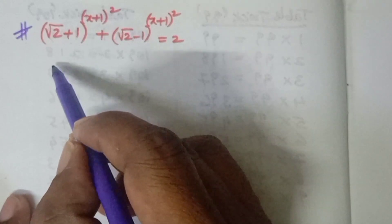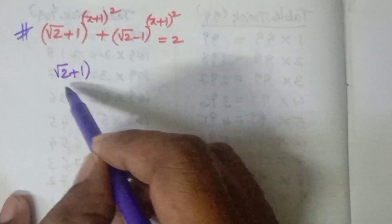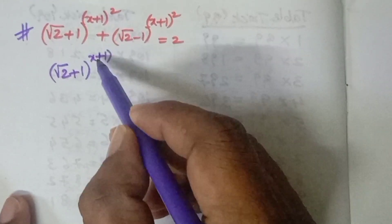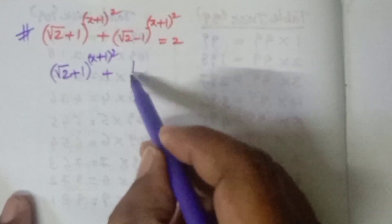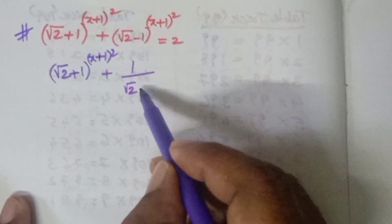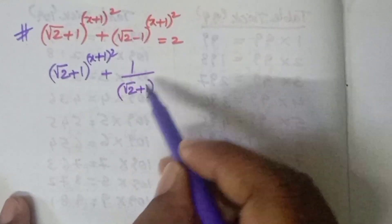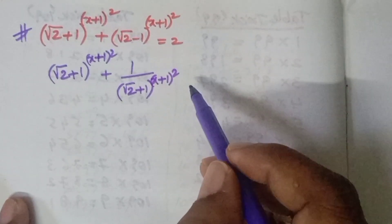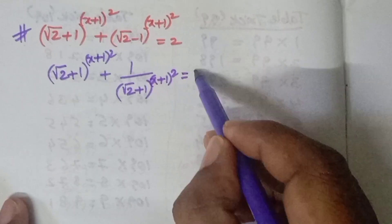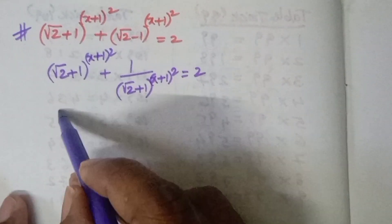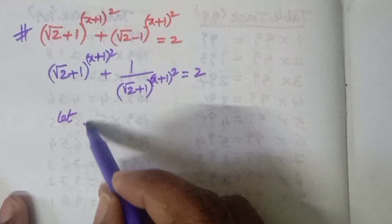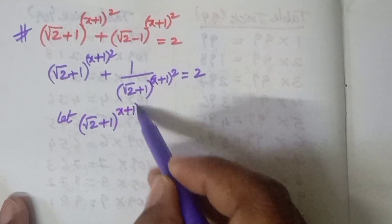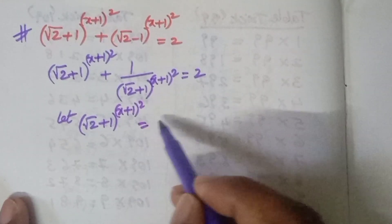First of all, this can be rewritten as (√2+1)^((x+1)²) plus — noting that √2-1 equals 1/(√2+1) — we write (1/(√2+1))^((x+1)²) = 2. Now let t = (√2+1)^((x+1)²).